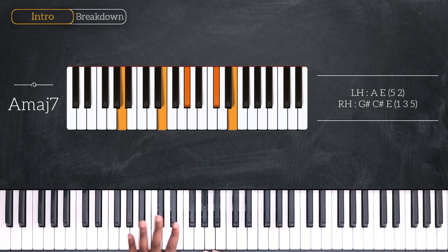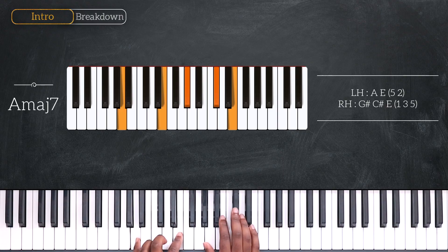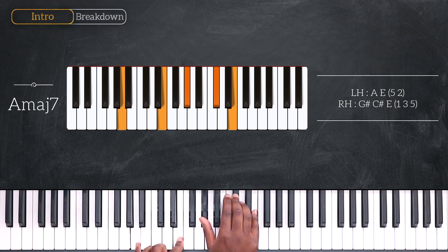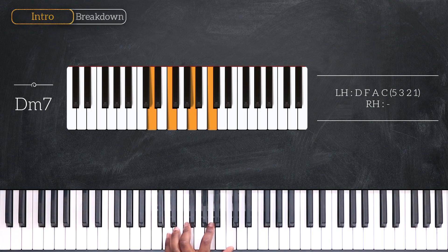With A and E on the left, G sharp, C sharp and E. And after that, we're playing D minor 7 only using the left, D, F, A and C.